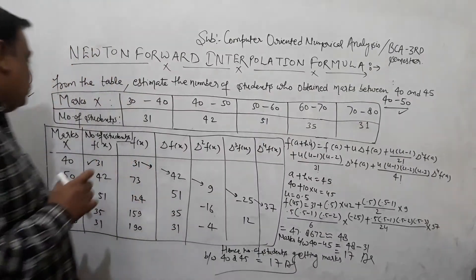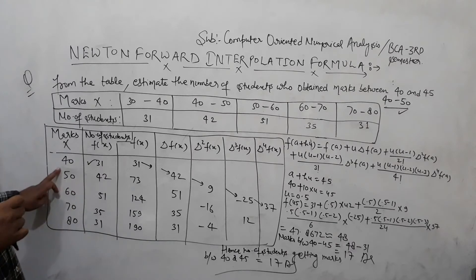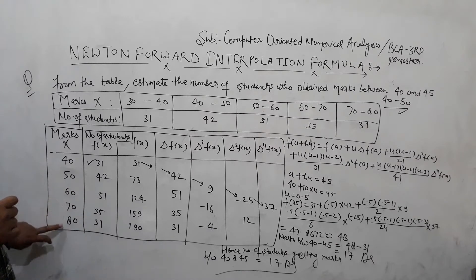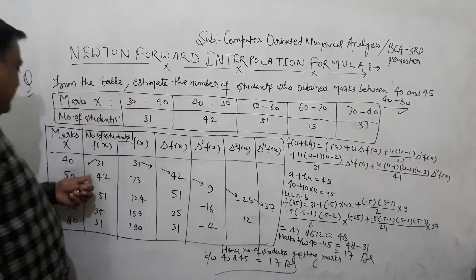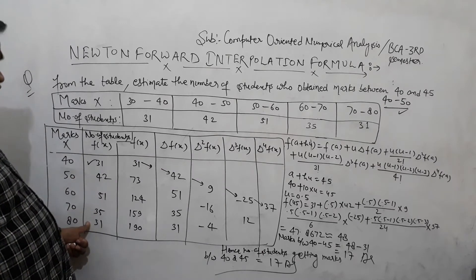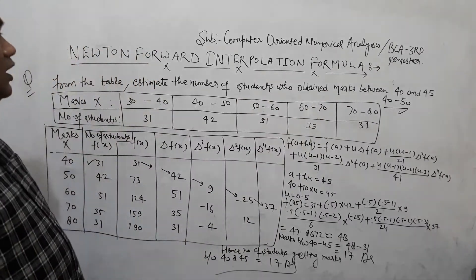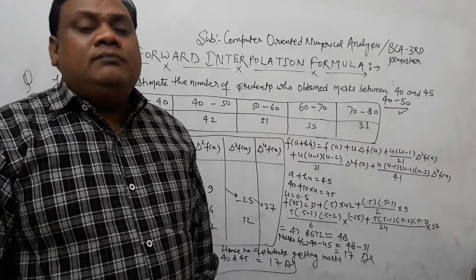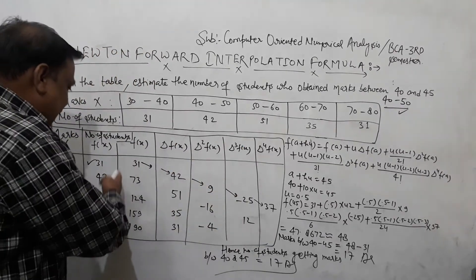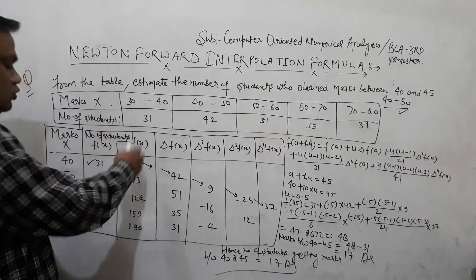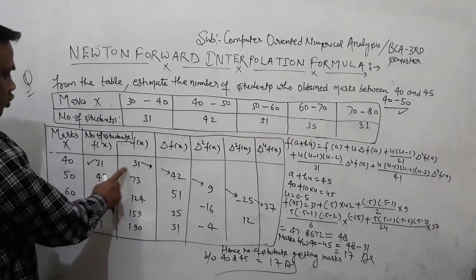The mark intervals are 40, 50, 60, 70, and 80. These are the corresponding x values. Since the data is given as a frequency distribution, we need to use cumulative frequency. The cumulative frequency means we accumulate the frequency values progressively.